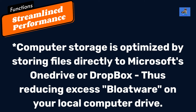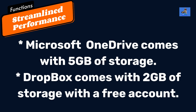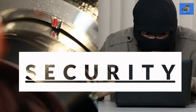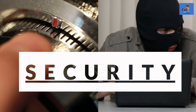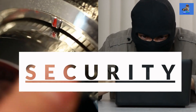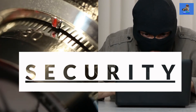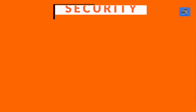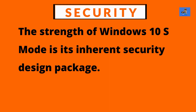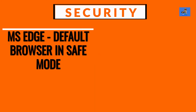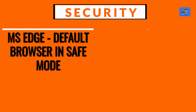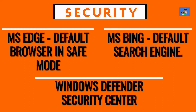Computer storage is optimized — files needing storage are automatically stored to Microsoft's OneDrive cloud or Dropbox, freeing up your local SSD or HDD and reducing bloatware on your hard drive. Microsoft OneDrive comes with 5GB of storage; Dropbox comes with 2GB of storage with a free account. The strength of Windows 10 in S-mode is its inherent security design package, which consists of Microsoft Edge in Safe Mode as the default browser, Microsoft Bing as the default search engine, and Windows Defender Security Center as the default antivirus program.